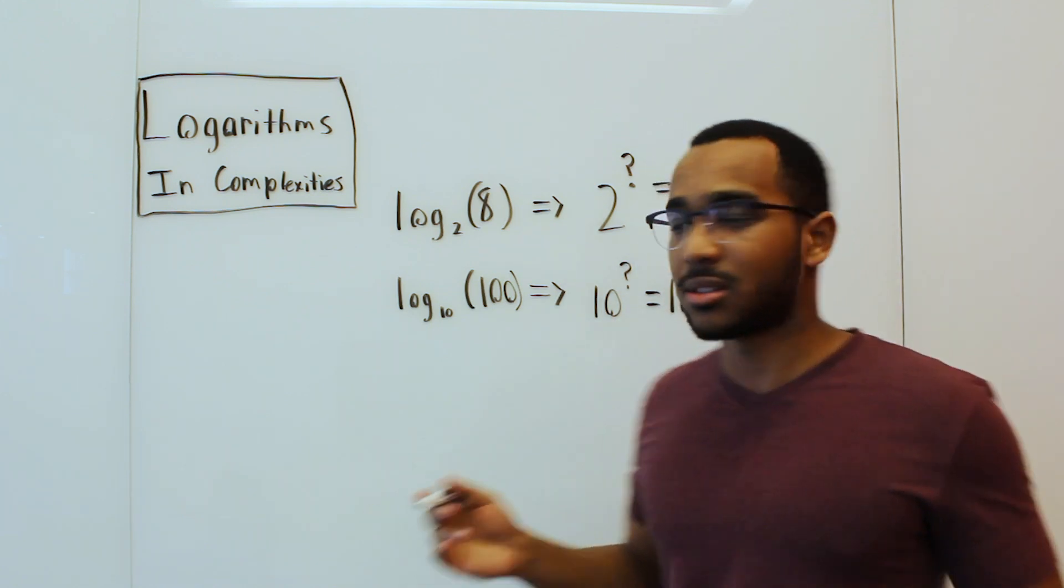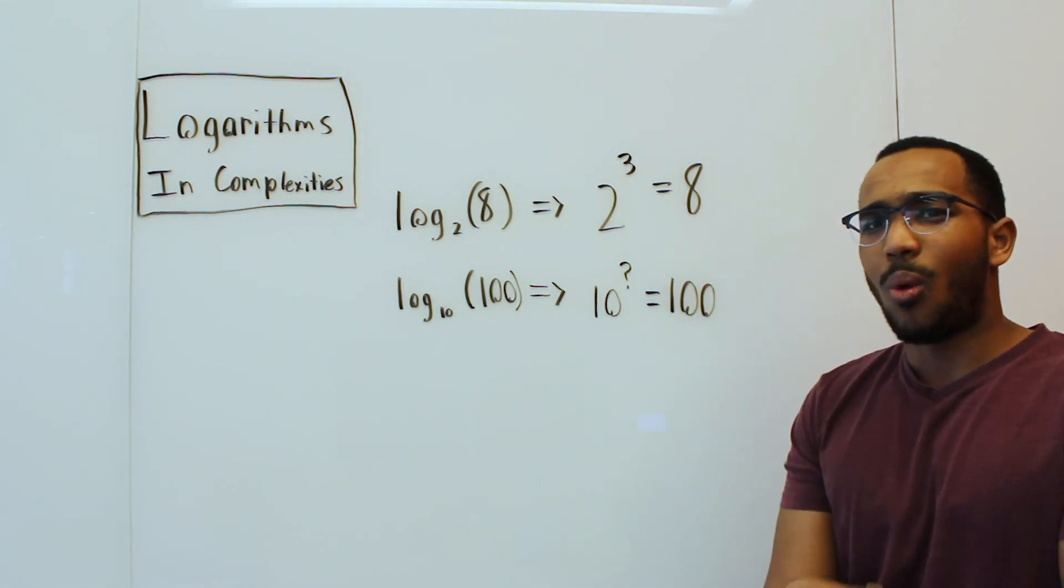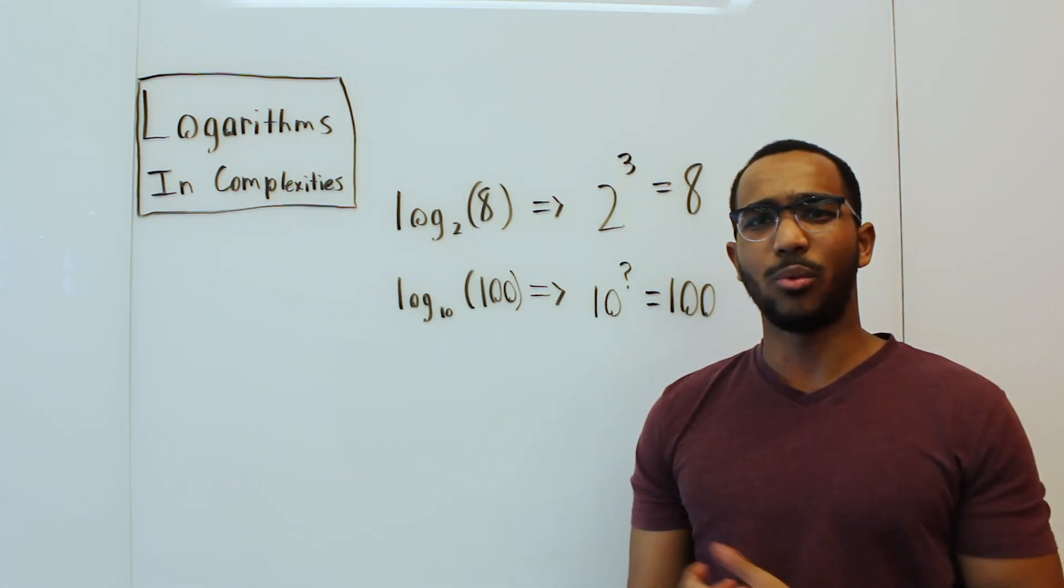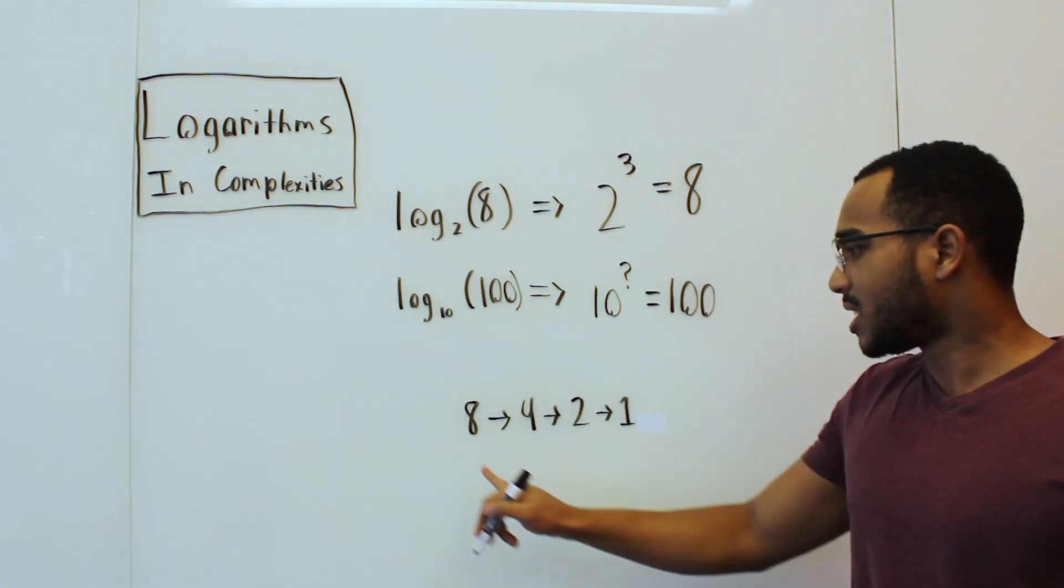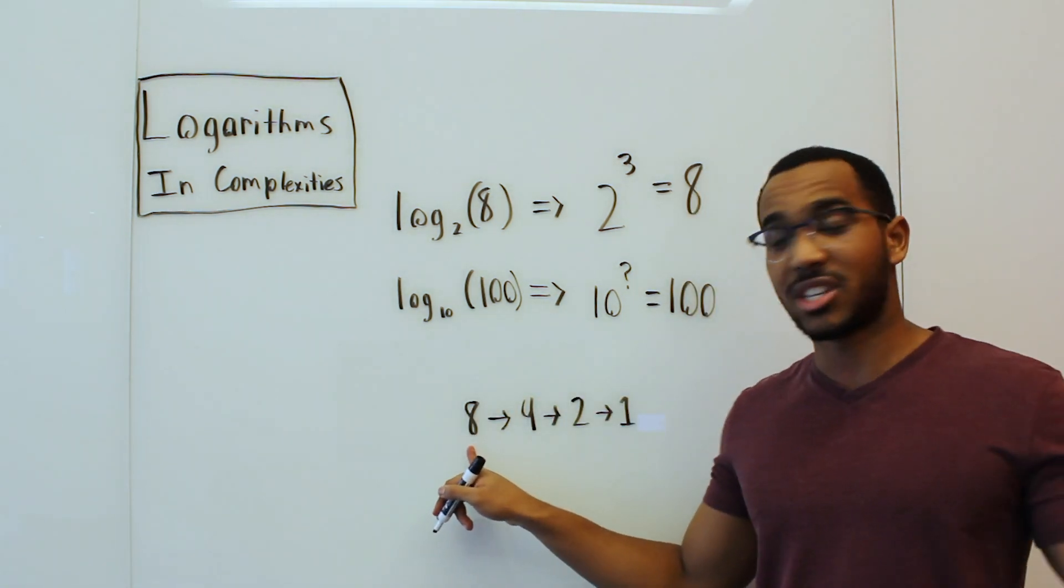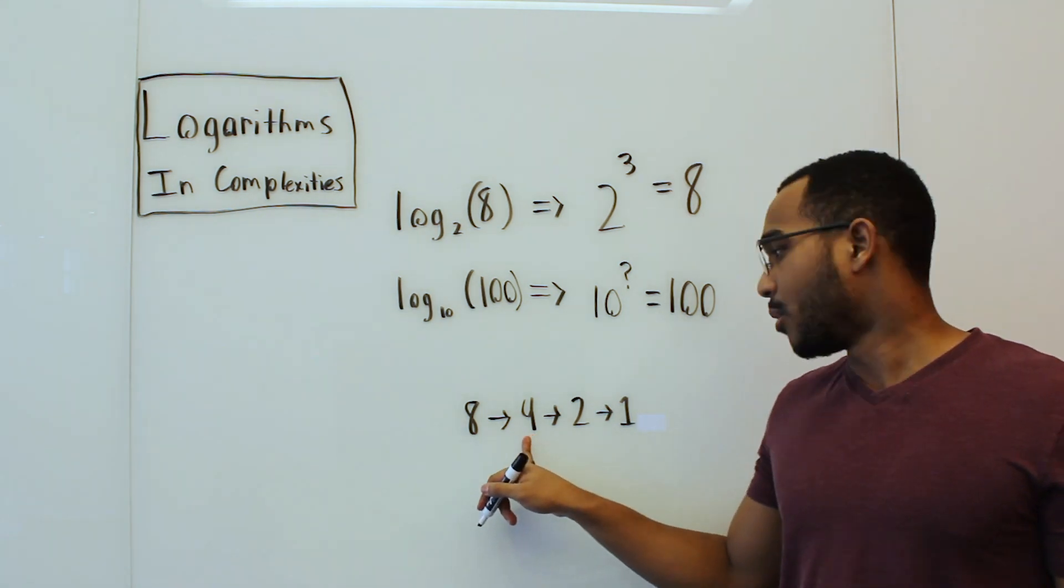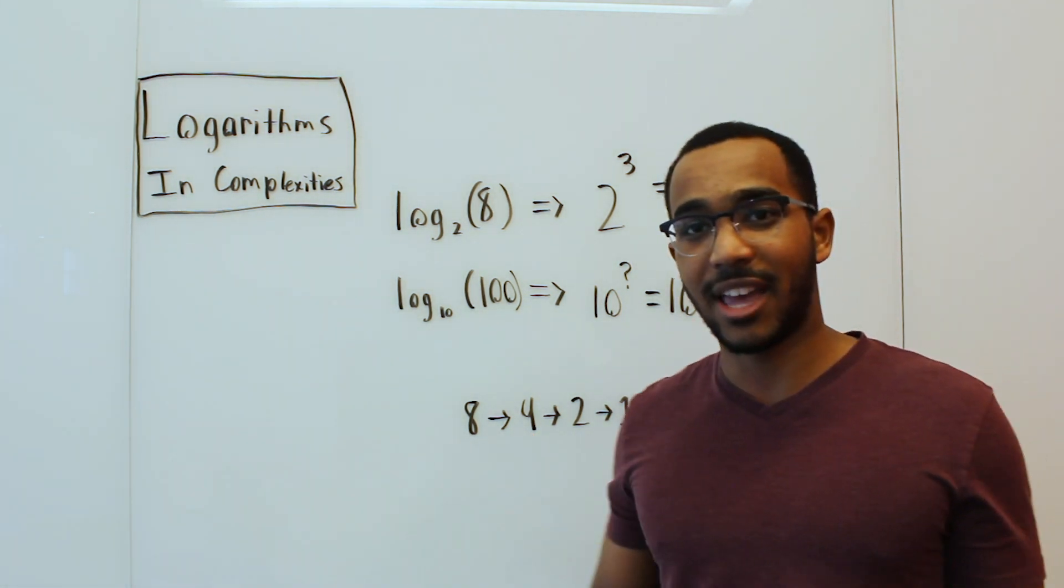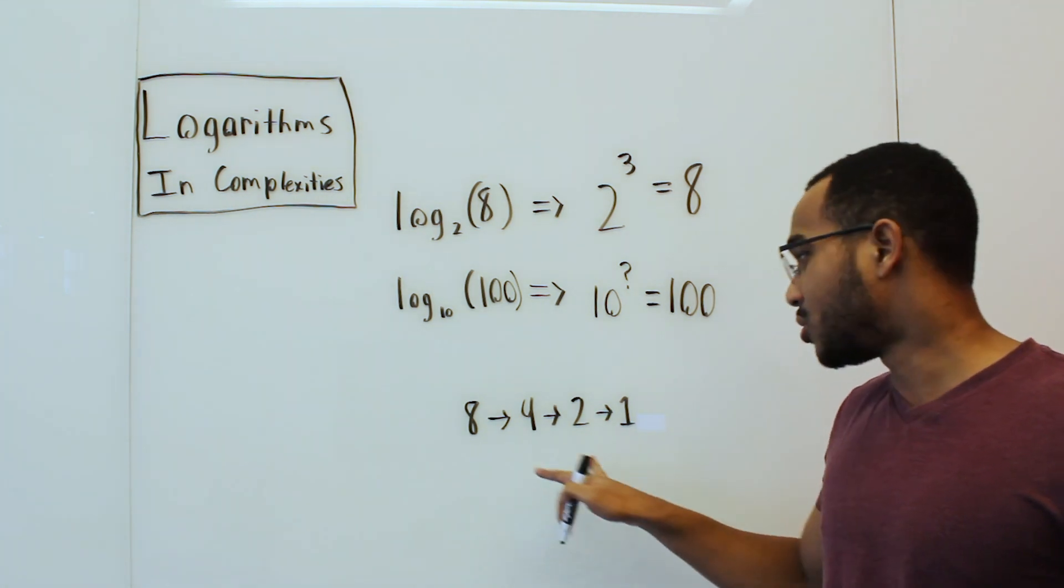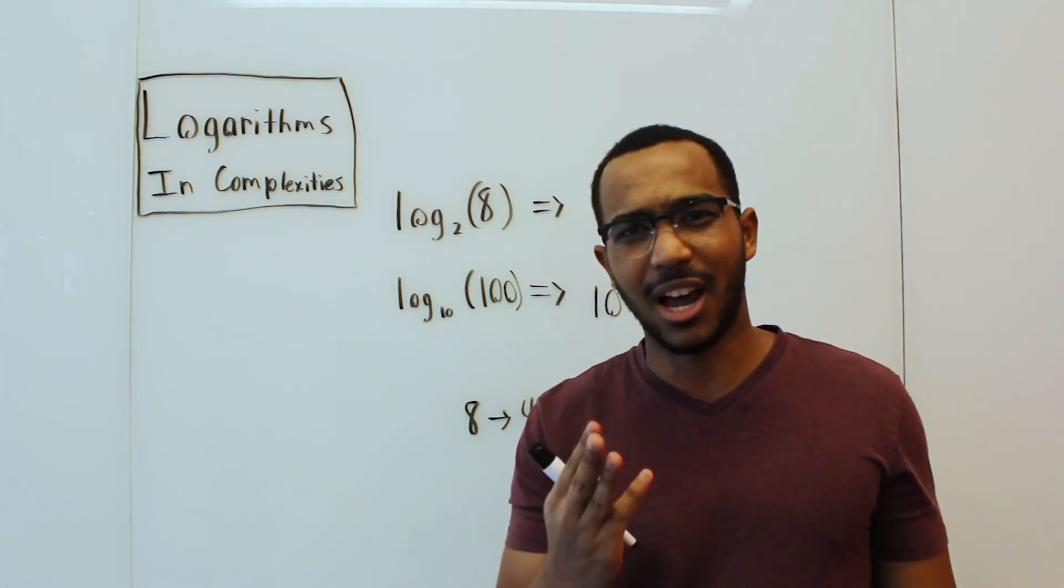Well, that answer is 3. So why is it 3? Let's look at what we're actually doing. Do you see how we're doing 3 divisions until we get down to 1? We go from 8 to 4, that's 1 cutting in half. We go from 4 to 2, that's cutting in half again. And then we go from 2 to 1. We cut in half 3 times.